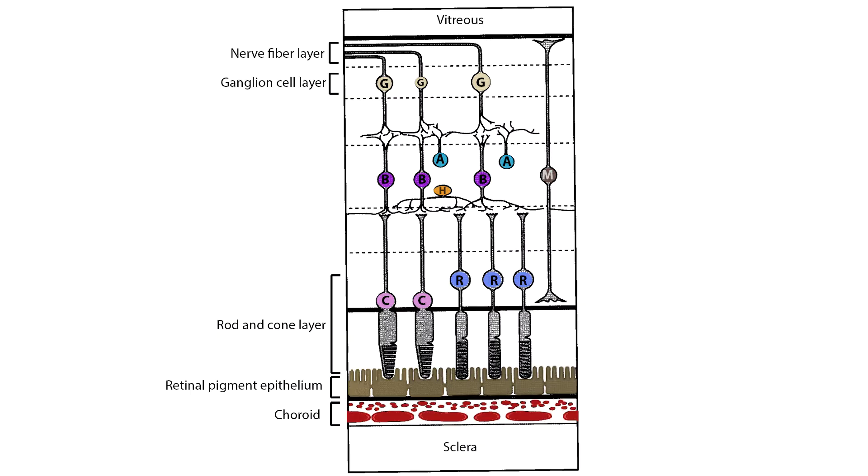Here is a cross-section of the retina. The inner part interfaces with the vitreous. The outer part interfaces with the choroid and the sclera.